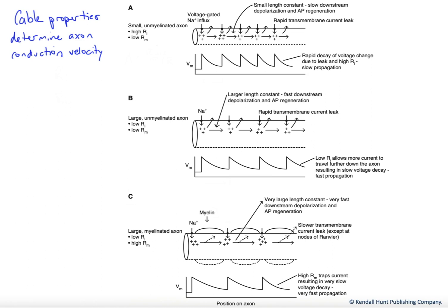These are the passive electrical properties. And the key ones we want to focus on are the resistance internally, the resistance to current flow along the cytoplasm, and the resistance to current flow across the membrane and out of the cell.